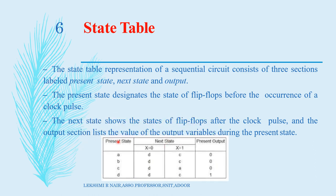This is an example of a state table. Here we can see present state, next state, inputs and output. Present state is represented like this, then next state — we can define the next state for x equal to 0 and x equal to 1. Now we can find out the output for all these conditions. So in the state table, we are representing present state, next state and output like this. This is the example of a state table.